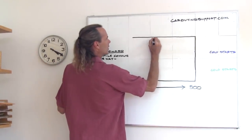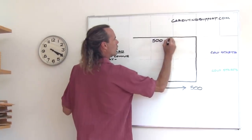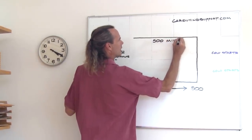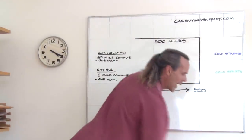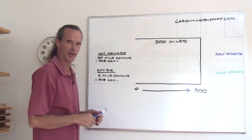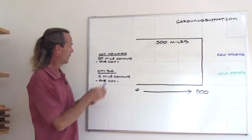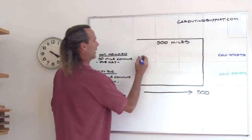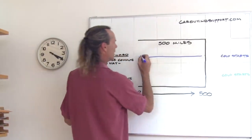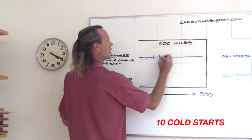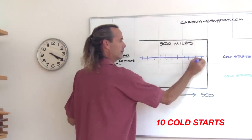Both of these drivers, over the course of 500 miles, will be having to cold start their car every time they get in it. Now, Highway Howard, since he drives 50 miles, is going to have 10 cold starts.